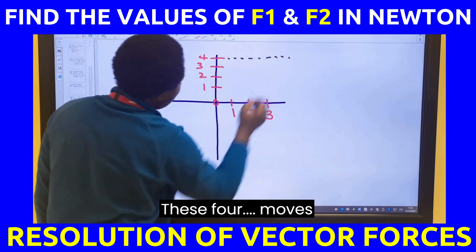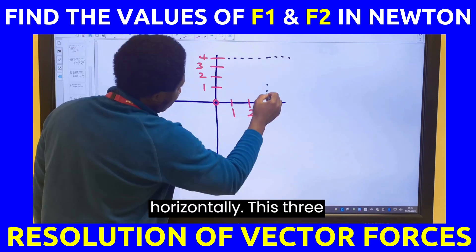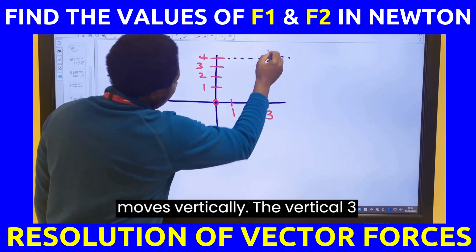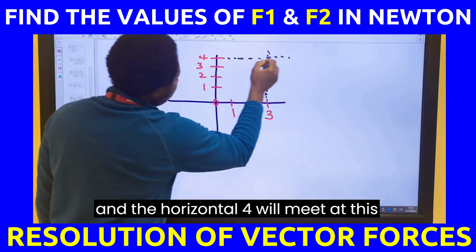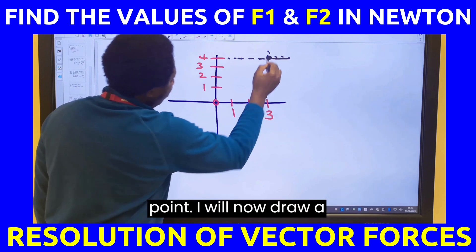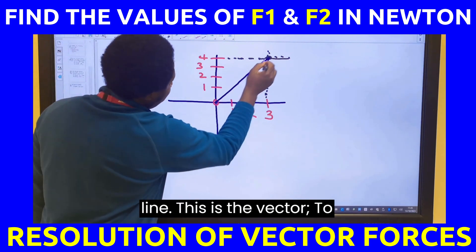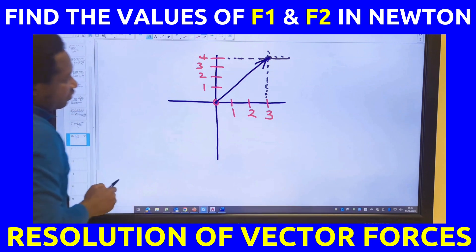This 4 moves horizontally. This 3 moves vertically. The vertical 3 and the horizontal 4 will meet at this point. I will now draw a line. This is the vector.